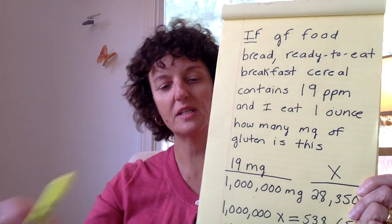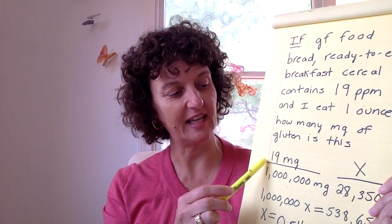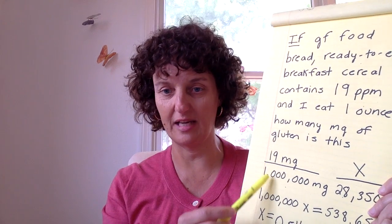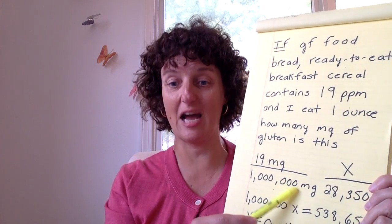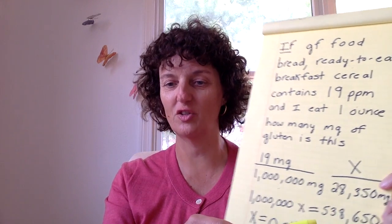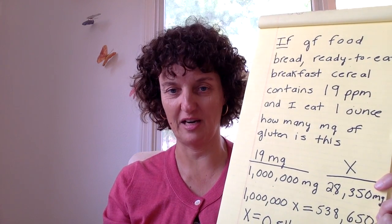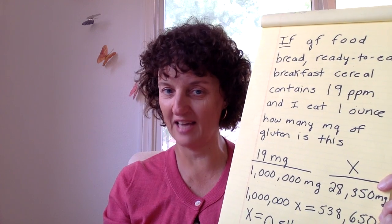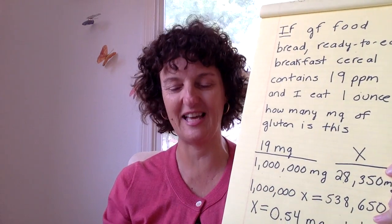It becomes a proportion. So 19 parts per million is 19 milligrams out of 1 million milligrams, and I want to know how many milligrams is in an ounce. An ounce is approximately 28,350 milligrams. You can either believe me or go Google how many milligrams are in an ounce — this is rounded, but it's basically that number.